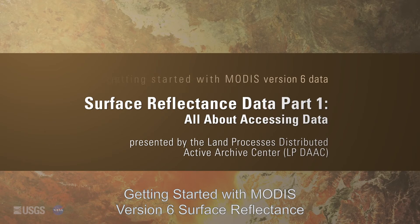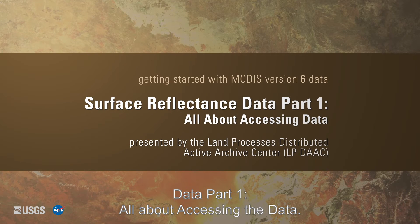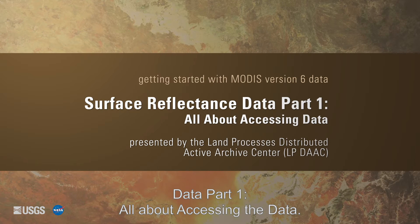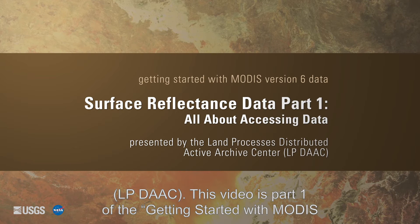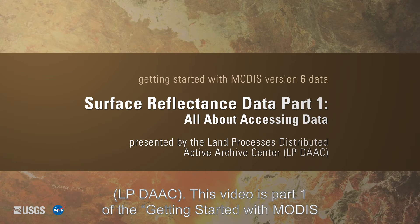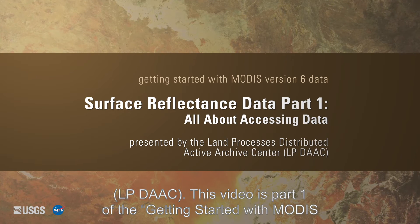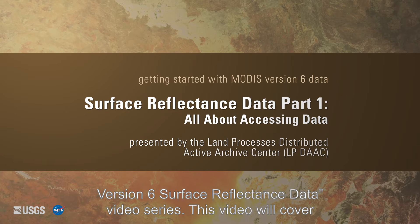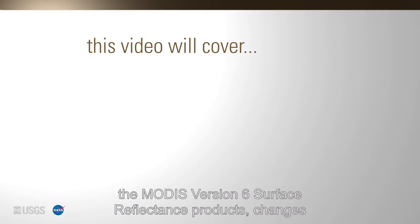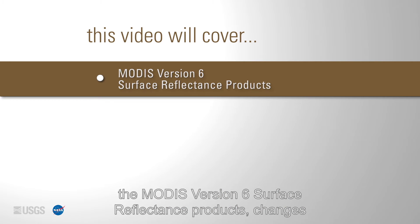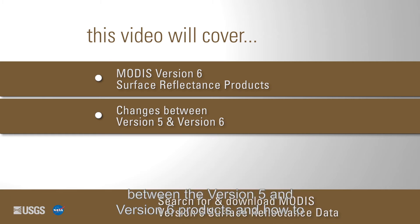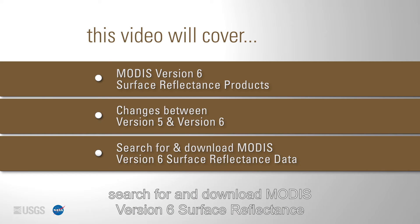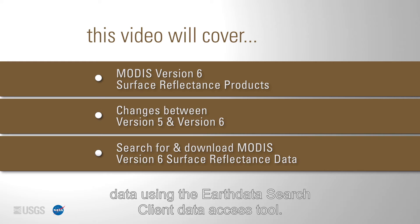Getting started with MODIS version 6 surface reflectance data, part 1: all about accessing the data, presented by the Land Processes Distributed Active Archive Center, LP DAAC. This video is part 1 of the getting started with MODIS version 6 surface reflectance data video series. This video will cover the MODIS version 6 surface reflectance products, changes between the version 5 and version 6 products, and how to search for and download MODIS version 6 surface reflectance data using the EarthData Search client data access tool.